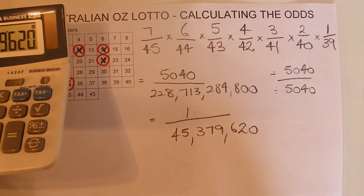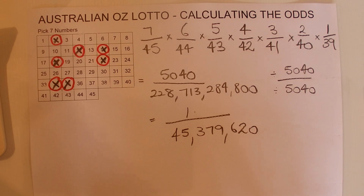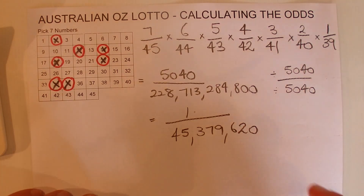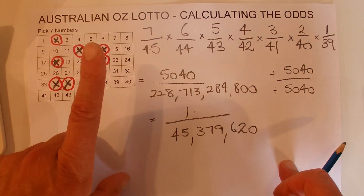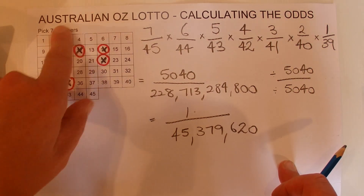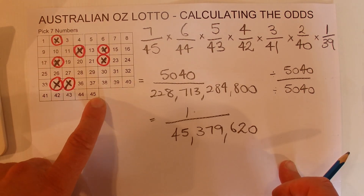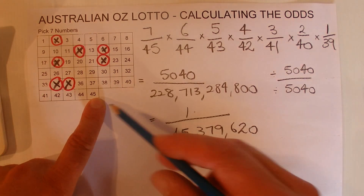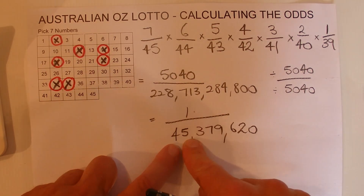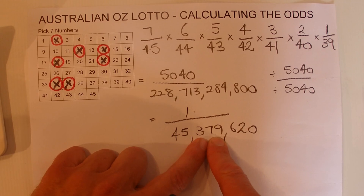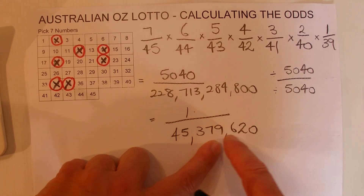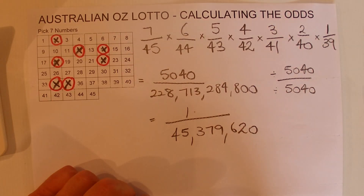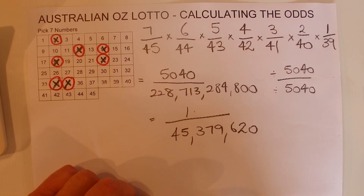So there we go — the chance of winning AusLotto in one game and picking all seven numbers out of 45 is one chance in 45,379,620. I hope you've enjoyed this video. Thanks for watching and goodbye for now.